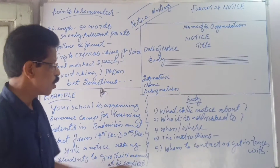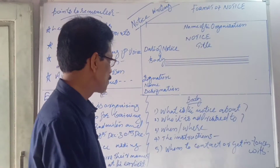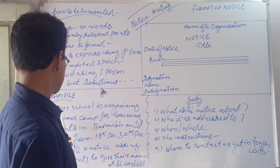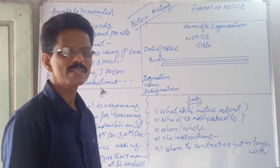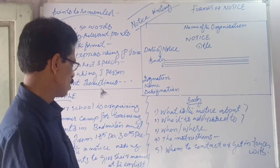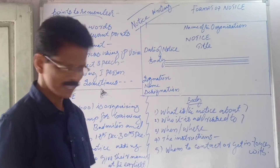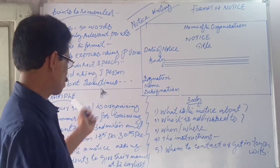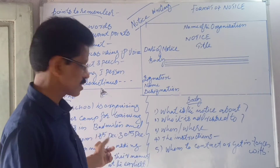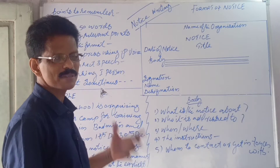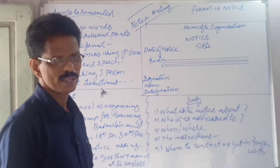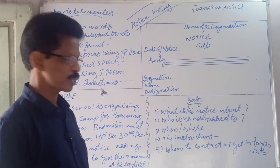So what is the body? What are the things to take care of? What is the notice about? It is about a summer camp for training students — 'summer camp' is enough as a title. Then, who is addressed to — of course the students of the school. Then, when and where: the date is given, and the school campus is mentioned as the place.